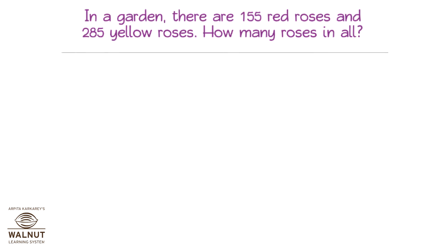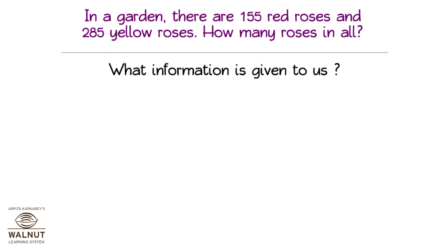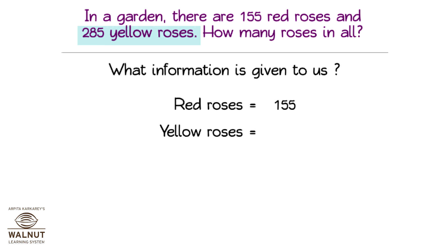In a garden, there are 155 red roses and 285 yellow roses. How many roses in all? What information is given to us? Red roses are 155, and yellow roses are 285.